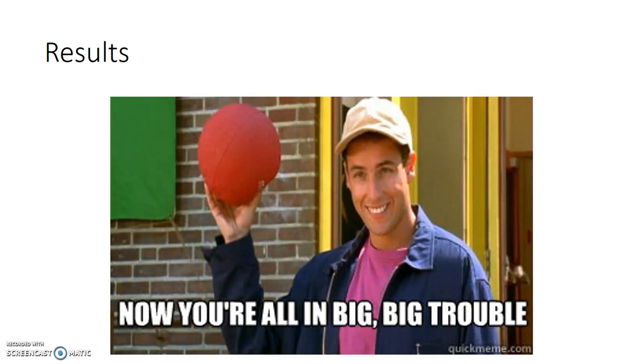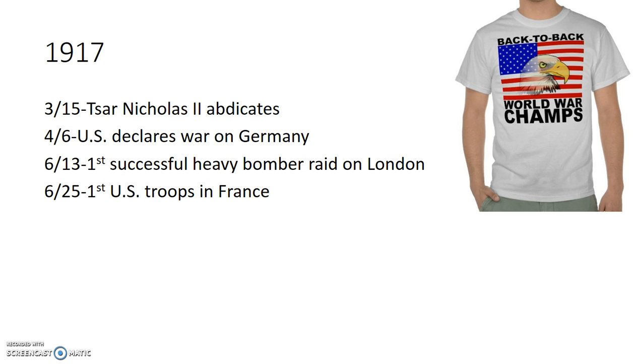The problem is the British intercept this. It takes them about three months, but eventually the British figure out a way to alert the United States so that the U.S. will trust that the message is legitimate. In 1917, on April 6th, the U.S. declares war on Germany about a month after the British show them the Zimmerman telegram.